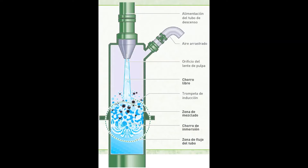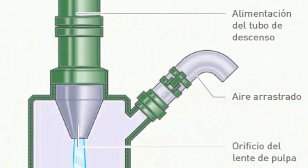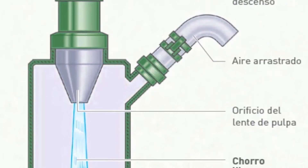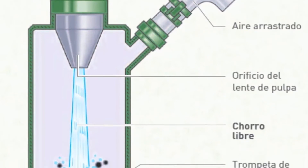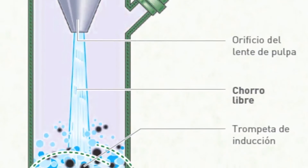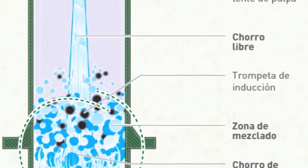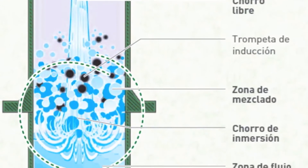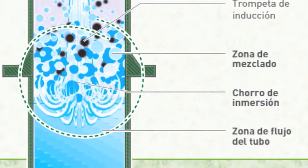We'll take a close look now at what's going on in the downcomer. New feed enters in the form of a high-speed jet and mixes with air drawn in through a side branch. As we go downwards, we see the liquid jet in the center plunging into a bed of dense foam in the downcomer. A zone of vigorously mixed fluid develops, and it is here that the small bubbles are made.